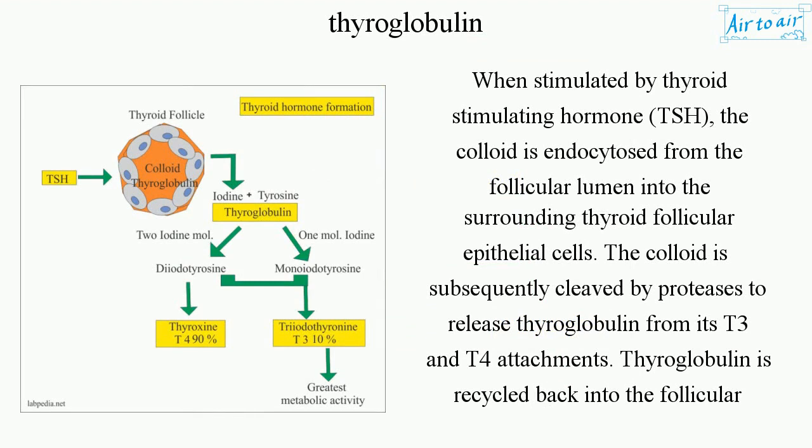When stimulated by thyroid-stimulating hormone (TSH), the colloid is endocytosed from the follicular lumen into the surrounding thyroid follicular epithelial cells. The colloid is subsequently cleaved by proteases to release thyroglobulin from its T3 and T4 attachments.